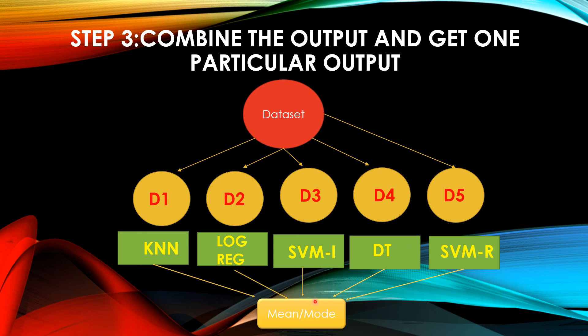This way, our bagging algorithm works. It combines the output of all the different models and then gives an output which could be a mean in case of regression problem and it could be a mode in case of classification problem. I hope everyone has understood the steps involved in bagging.